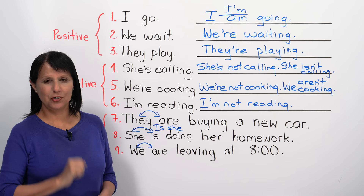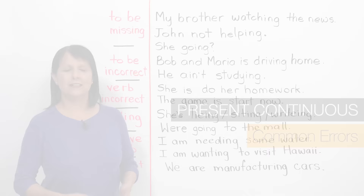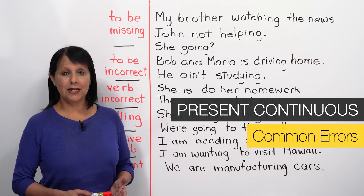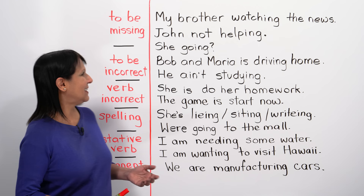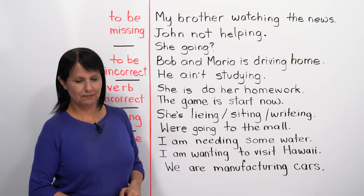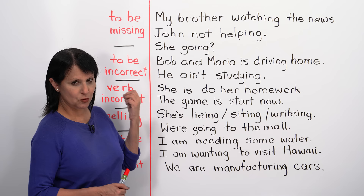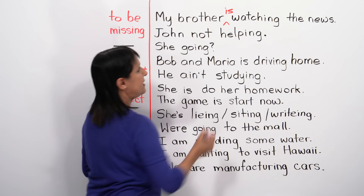Now let's look at common mistakes made with the present continuous tense. Sometimes the verb 'to be' is missing. For example, 'My brother watching the news' is wrong. You have to say 'My brother is watching the news' — remember: subject, verb 'to be,' then verb plus -ing.